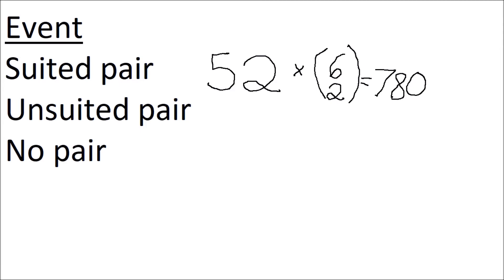How many ways are there to have an unsuited pair? Well, first you have to choose your rank of the unsuited pair. For example, fives.